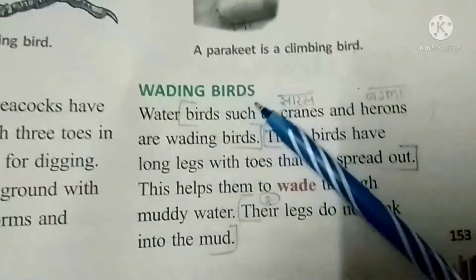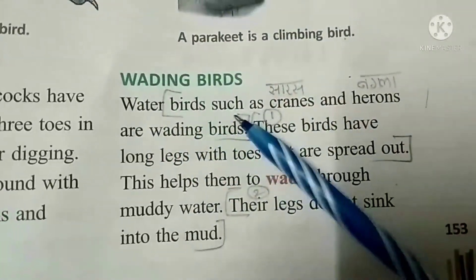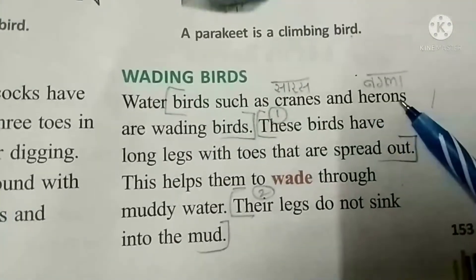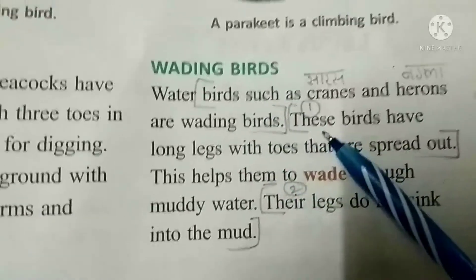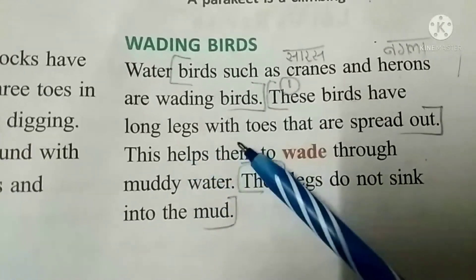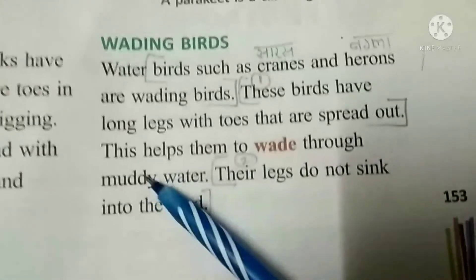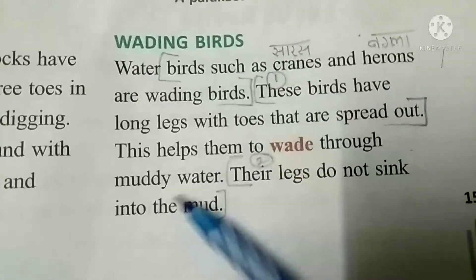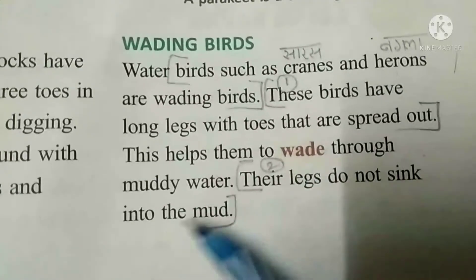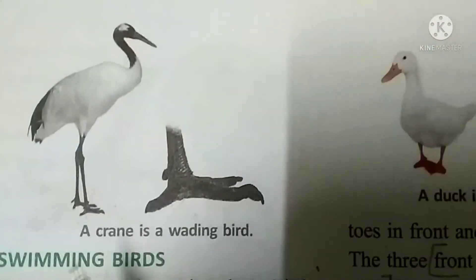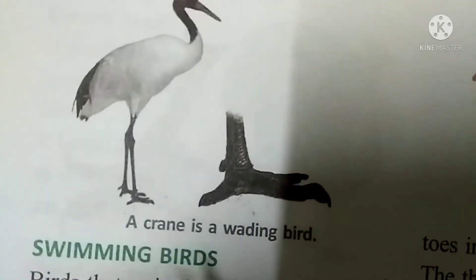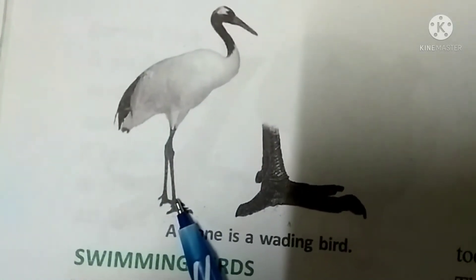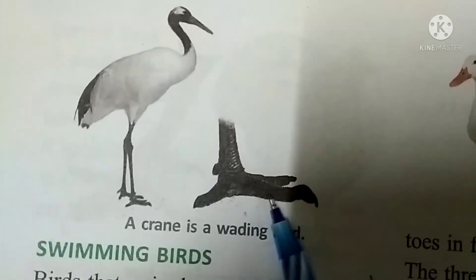Wading birds. These birds have long legs with toes that are spread out. This helps them to wade through muddy water — their legs don't sink into the water. See in this picture — a crane is a wading bird. Their legs are long with spread-out toes.